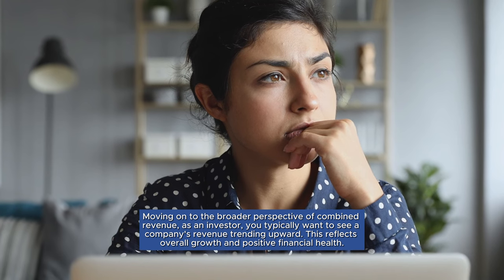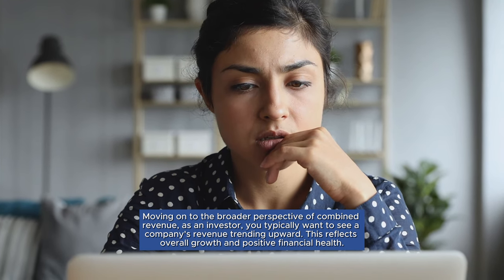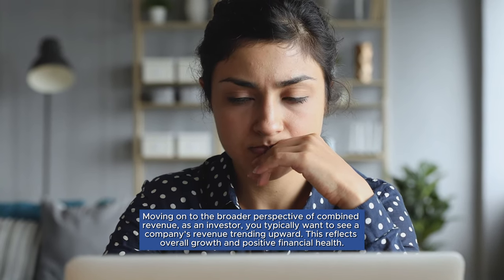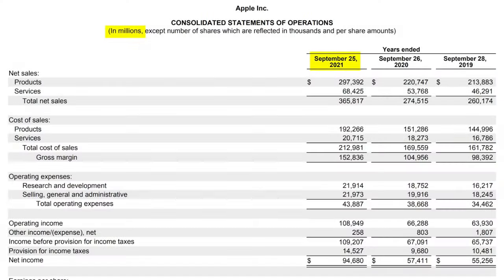Moving on to the broader perspective of combined revenue: as an investor, you typically want to see a company's revenue trending upward, reflecting overall growth and positive financial health. It's also beneficial to compare its revenue growth rate with that of its competitors in the same industry. In the case of Apple, we can observe that their revenue increased by 5.5% in 2020 and by a substantial 33.3% in 2021. These figures provide valuable context for assessing Apple's performance and competitive positioning within the industry.